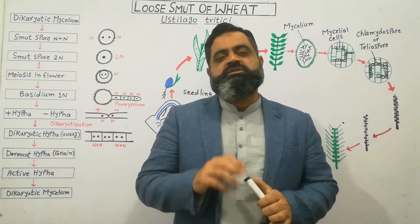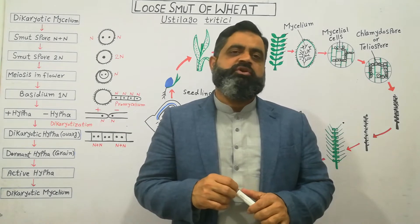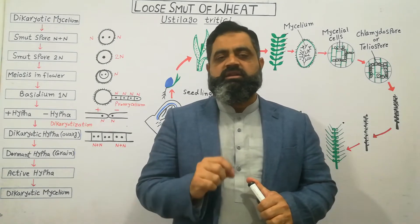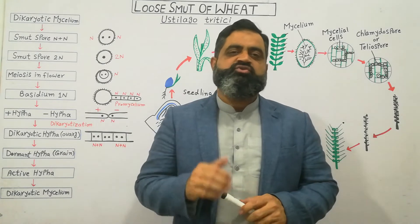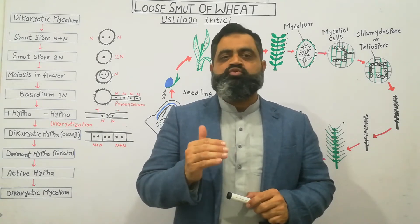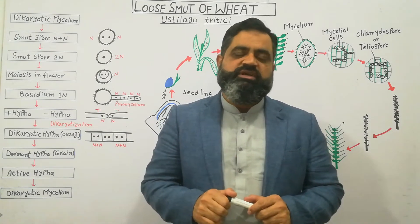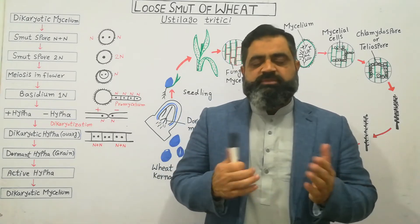It is called smut because it has spores which are black in color and these are dusty spores which resemble soot. That is why these spores are known as soot or smut.